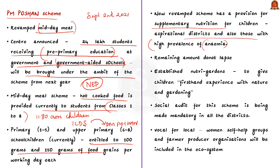Previously, up to 80% of the funds allocated for midday meals used to be spent and the unspent amount was surrendered. But now with the restructuring of the programme, the unspent amount will be used in the next year — it will not lapse. So the budget allocation for the scheme will carry forward.